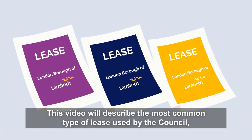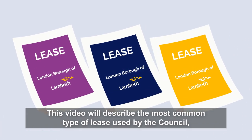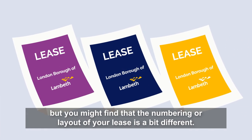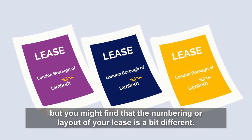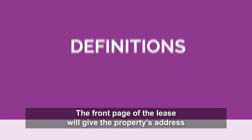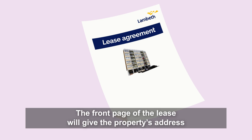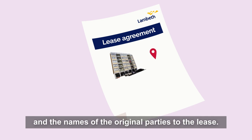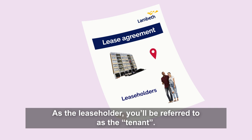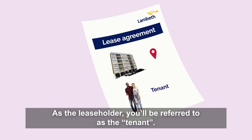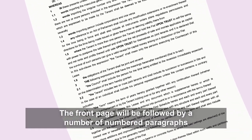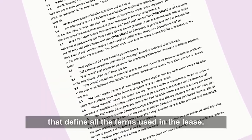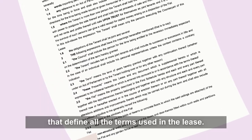This video will describe the most common type of lease used by the council, but you might find that the numbering or layout of your lease is a bit different. The front page of the lease will give the property's address and the names of the original parties to the lease. As the leaseholder, you will be referred to as the tenant. The front page will be followed by a number of numbered paragraphs that define all the terms used in the lease.